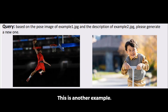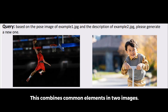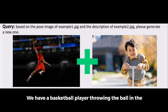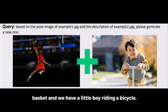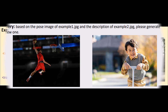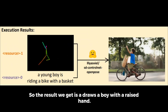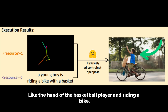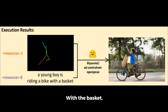Here is another example. This combines common elements in two images. We have a basketball player throwing the ball in the basket, and we have a little boy riding a bicycle. So the result we get is a boy with a raised hand like the hand of the basketball player, riding a bike with a basket. Quite interesting, right?